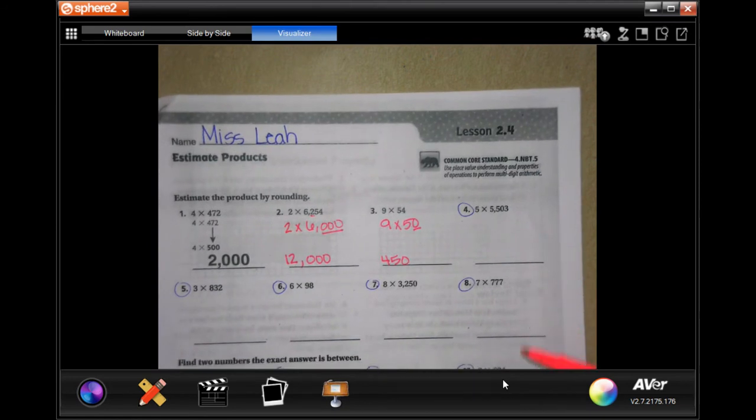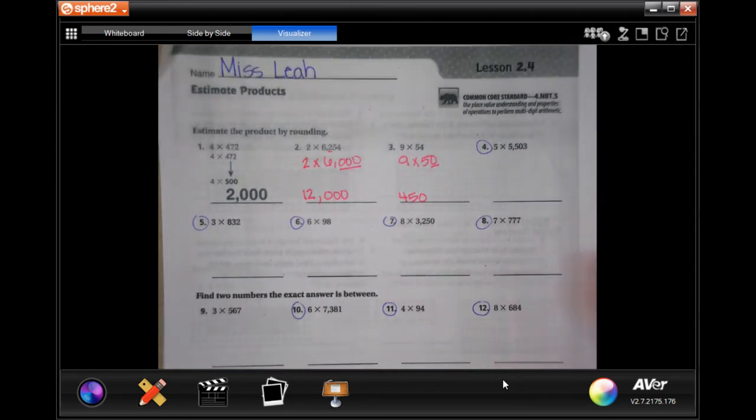You guys do four through eight on your own. Totally do it. Round it, then multiply it.